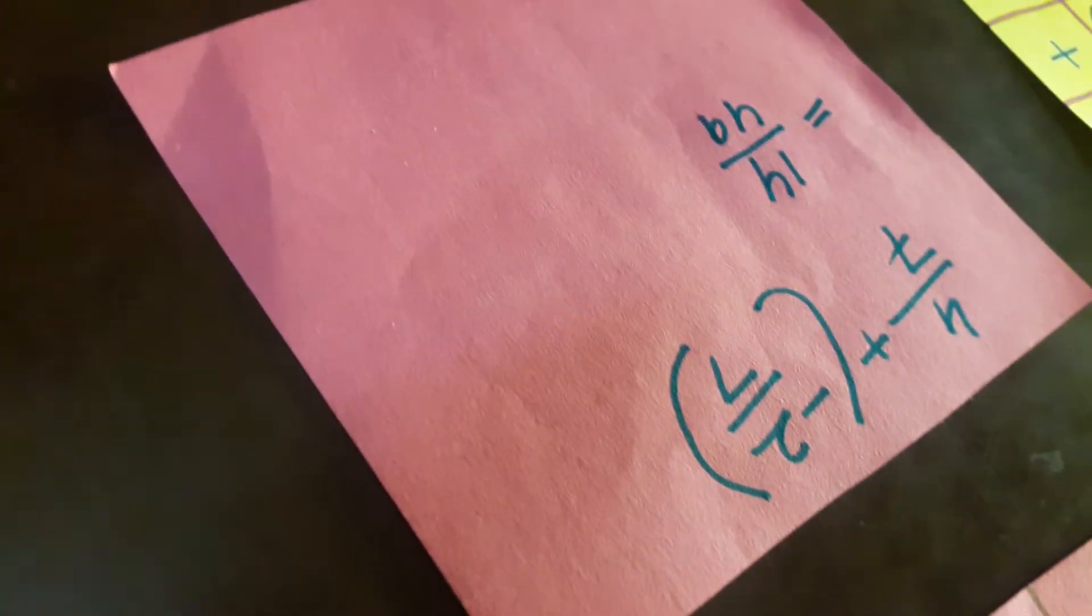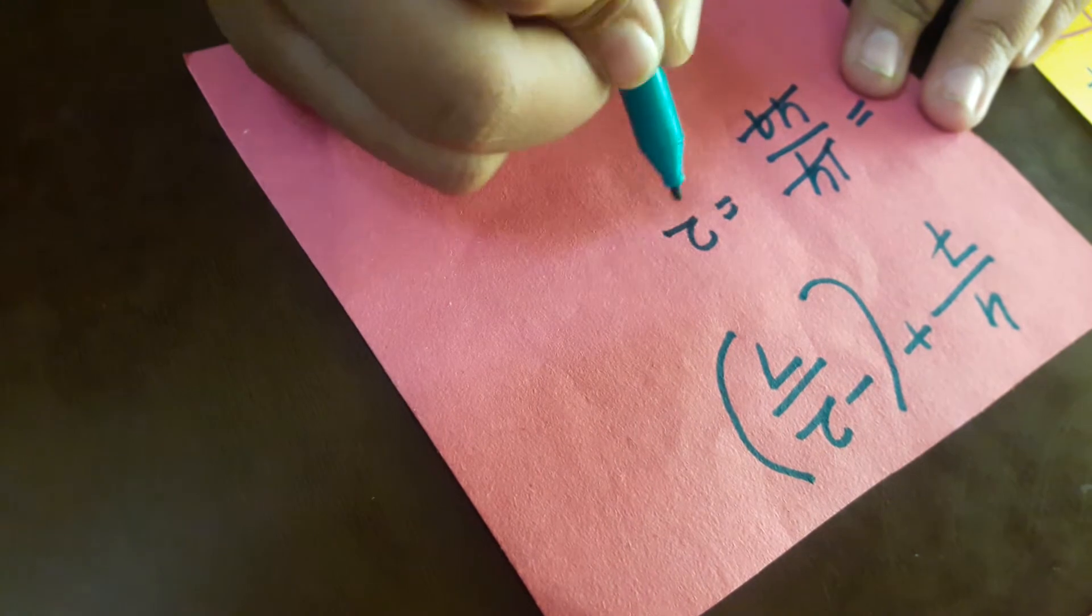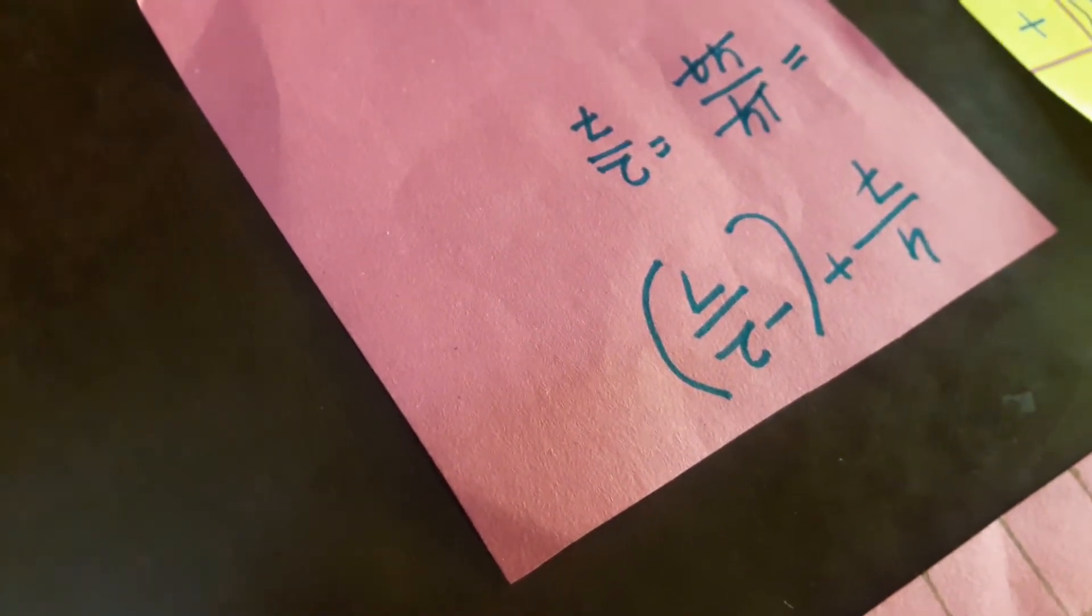Now we are going to cancel it into simplest form, which is 2 by 7. So addition of 4 upon 7 plus minus 2 upon 7 is equal to 2 by 7.